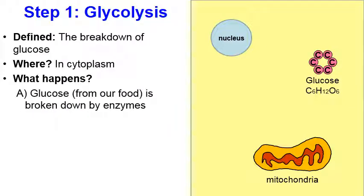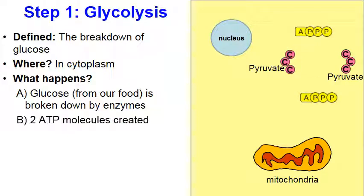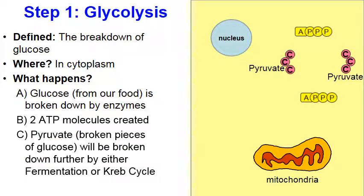Here's that molecule of glucose received from our food, and it's going to be broken down by enzymes. I like to illustrate animated scissors as symbolic of enzymes. What the enzymes will do is break down the glucose molecule, and when that happens, a couple molecules of ATP are created — this is the cell's energy, the point of glycolysis. Notice you also have two molecules of pyruvate — the broken pieces of glucose.